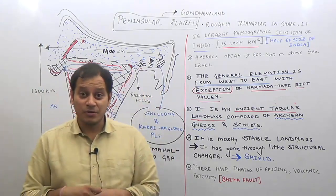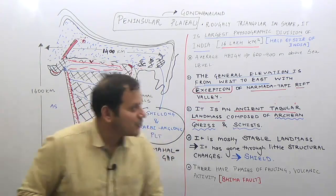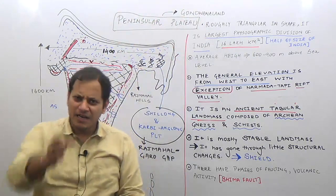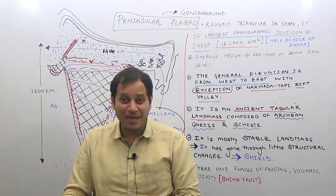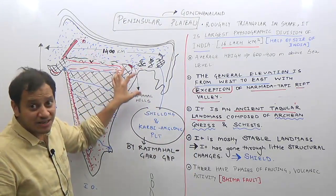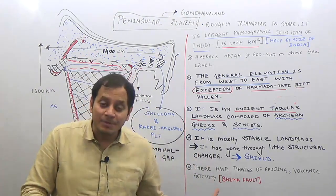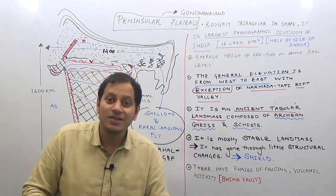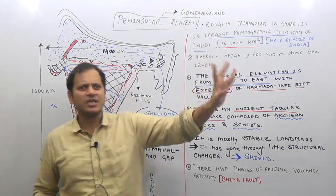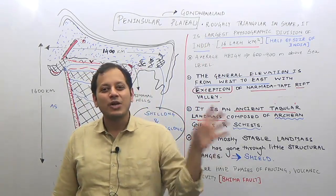The peninsular plateau is part of the ancient landmass known as Gondwana land. The name 'Gondwana' itself came from the Gond tribes who inhabit Maharashtra, Chhattisgarh, and Madhya Pradesh. The peninsular plateau was part of Gondwana land along with Australia, Antarctica, Africa, and South America.